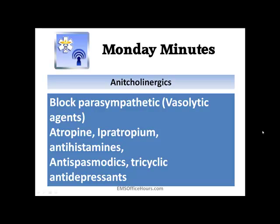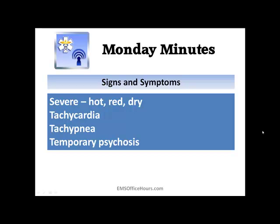When you're overdosed on these — not regular dosages, because we use atropine, ipratropium, and antihistamines in the field — we're talking about overdoses of these poisons. Some of the symptoms you're going to see: hot, red, and dry. Your patient's going to be hot, very flushed, and dry. Sometimes they call them 'mad' — those are the severe symptoms where you get that psychosis. They'll be tachycardic with elevated heart rate, tachypneic with elevated respiratory rate, and that temporary psychosis. So if you've got a patient that's very hot, red, and dry, start thinking they might be overdosed on an anticholinergic.